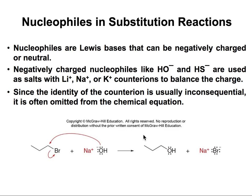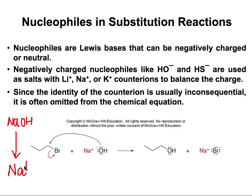Nucleophiles are Lewis bases - they are willing to give away those electrons. Nucleophiles usually have a negative charge, but there are some that can be neutral, and we'll talk about that later. For example, NaOH doesn't exist as written - it's actually Na+ plus OH-, and the role of sodium is to be the counter ion. It's a spectator ion not involved in the reaction. So the OH- is our nucleophile, and that is what we care about.